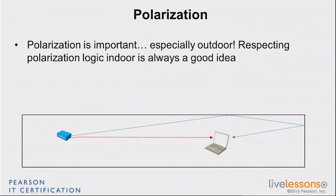Typically, we say that outdoors, if you send a signal that is electrically polarized vertically, and the other end is not electrically polarized vertically as well, you may be losing up to 20 dB by using the wrong polarization on one side. Using vertical on one side and horizontal on the other side, you lose up to 20 dB. So that is very important outdoors.